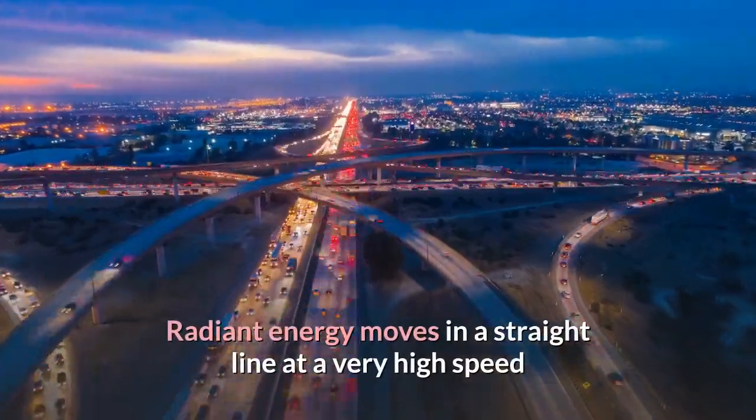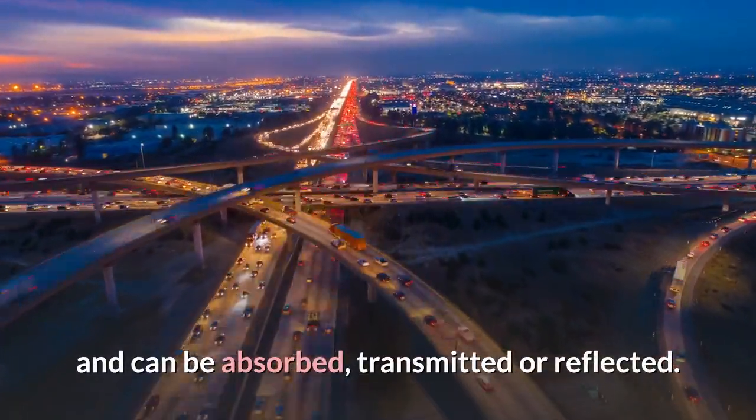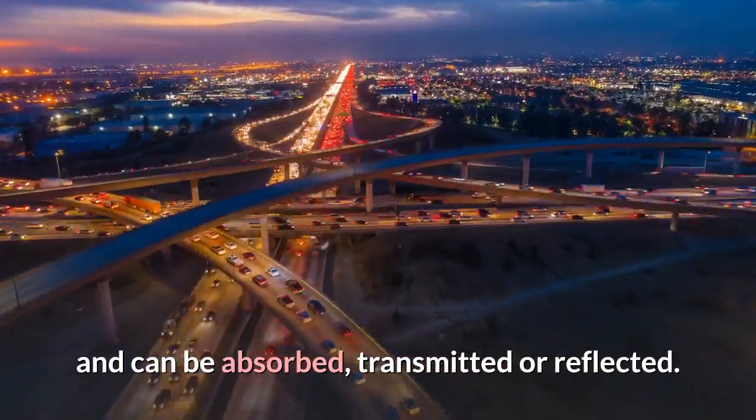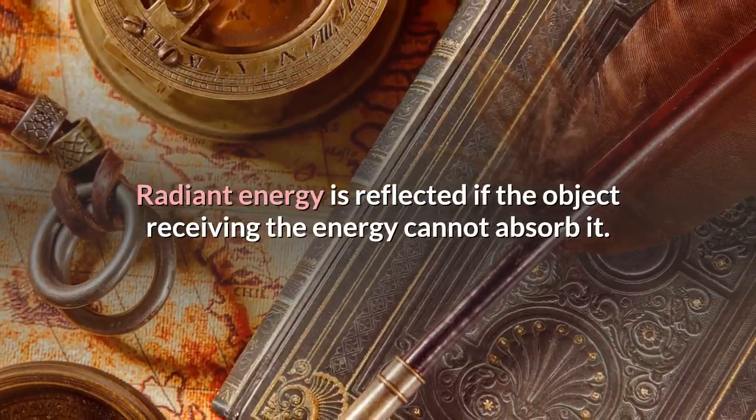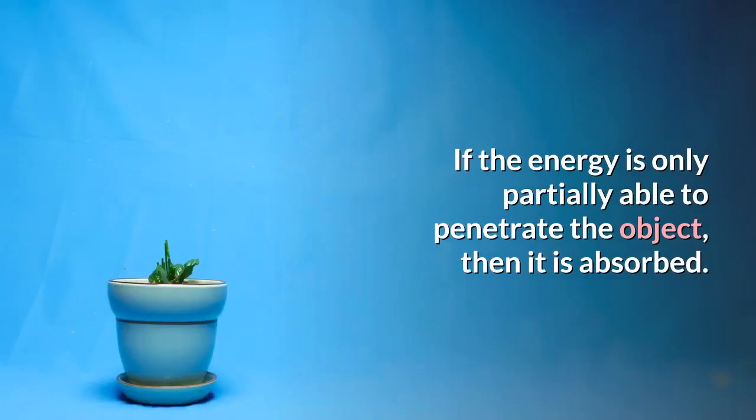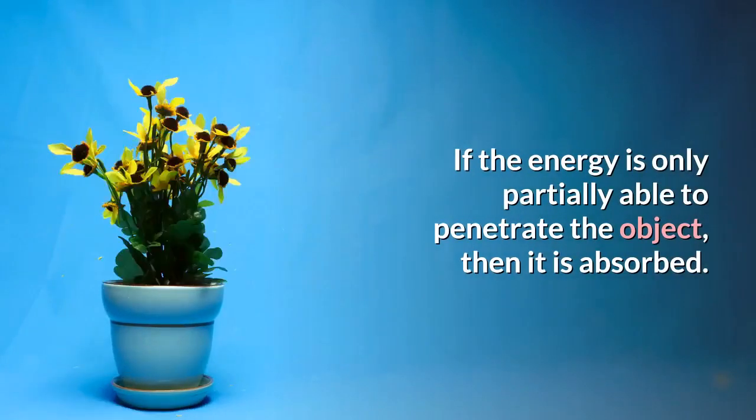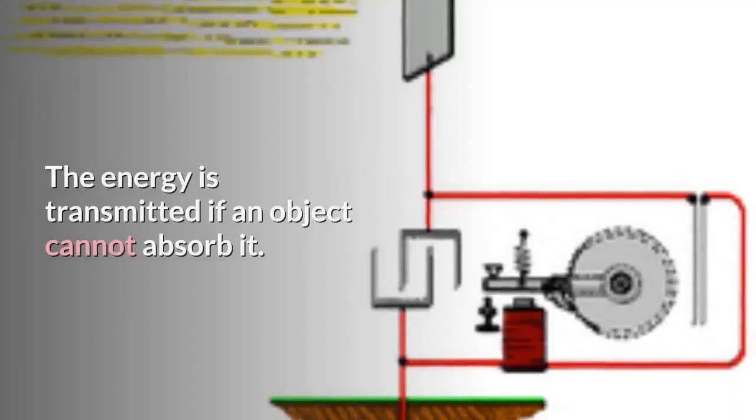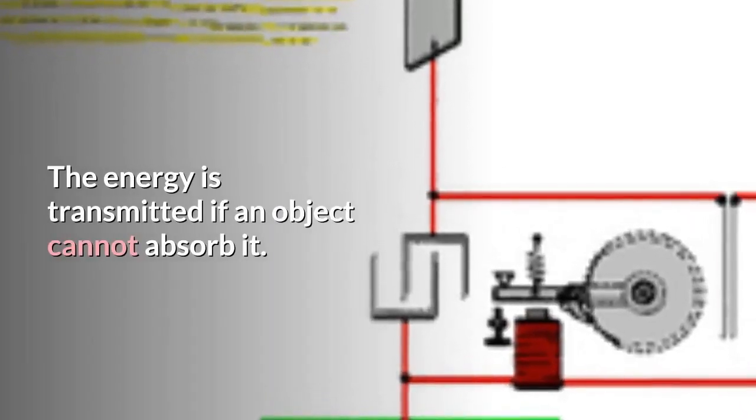Radiant energy moves in a straight line at a very high speed and can be absorbed, transmitted or reflected. Radiant energy is reflected if the object receiving the energy cannot absorb it. If the energy is only partially able to penetrate the object, then it is absorbed. The energy is transmitted if an object cannot absorb it.